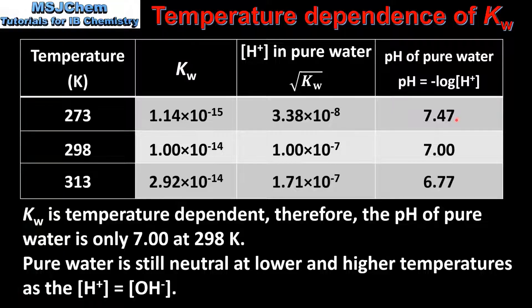So at 273 and 313 Kelvin, pure water is still neutral despite having a pH greater or lower than 7. This is because the concentration of hydrogen ions is equal to the concentration of hydroxide ions.